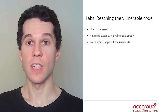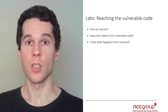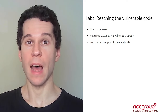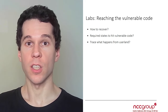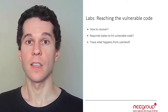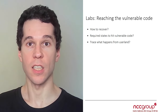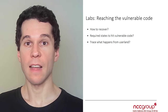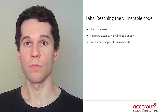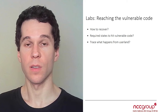Once we have reached this function, the second goal is to reach the vulnerable path in the function. We're going to need specific states for both the enlistment and the transaction. And the last thing is to be able to track what happens from userland. Okay, let's get started.